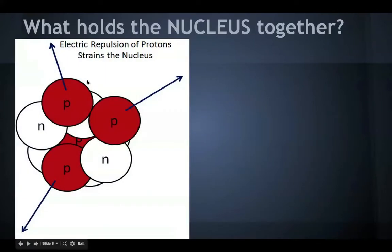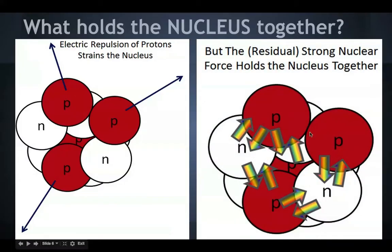Okay, this picture shows electric repulsion of protons strains the nucleus. Okay, so they want to break apart. These arrows are showing this force that they want to break apart. So obviously if they're pushing out, something's pushing them back in and holding them in the nucleus. That force is called the strong nuclear force, and it holds the nucleus together.